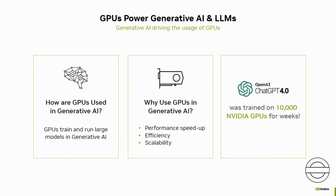Generative AI models often involve complex mathematical operations and require intensive computations. GPUs are designed to be highly effective for parallel processing, enabling faster training and inference times for generative AI models compared to using traditional CPUs. GPUs excel in parallel processing, matrix operations, memory capacity, and memory bandwidth, making them an ideal choice for powering generative AI. They significantly accelerate training and inference processes, enable working with large-scale models, and support real-time applications. For example, ChatGPT was trained on 10,000 NVIDIA GPUs for weeks.